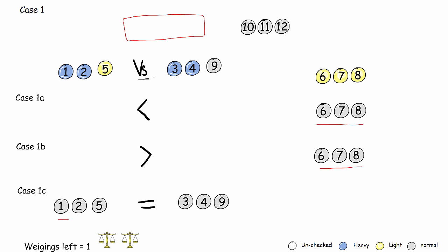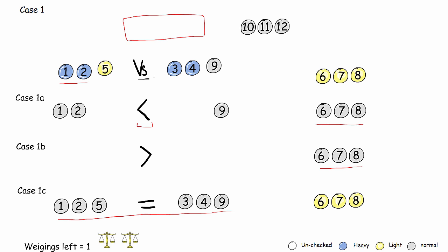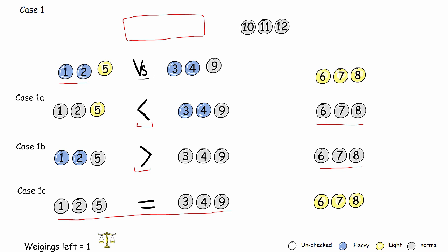Now we weigh, with the following possibilities: either the scale shifts — in which case balls 6, 7, and 8 are normal — or the scale balances, which means all balls except 6, 7, and 8 are normal. If the scale shifts to the right, it could not be because of ball 9, nor because of balls 1 and 2, since if they were faulty they'd be heavy and shift the scale left. So balls 1 and 2 are normal, and one of balls 3, 4, or 5 is faulty. If the scale shifts to the left, balls 3, 4, and 5 are eliminated similarly, and one of balls 1 or 2 is faulty.